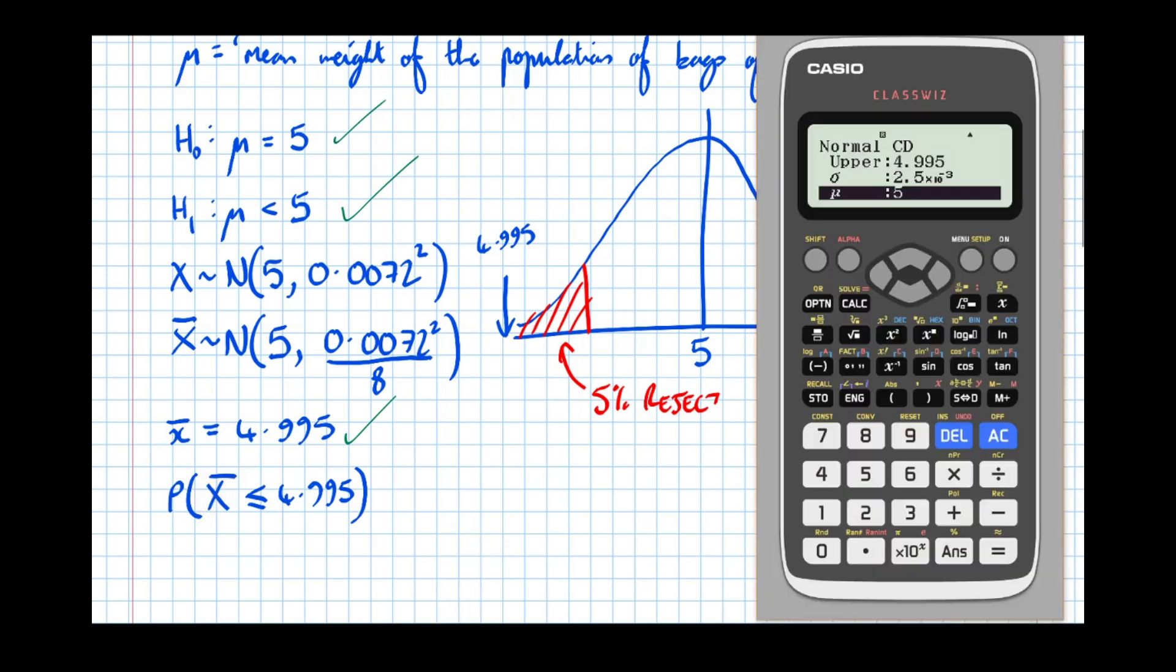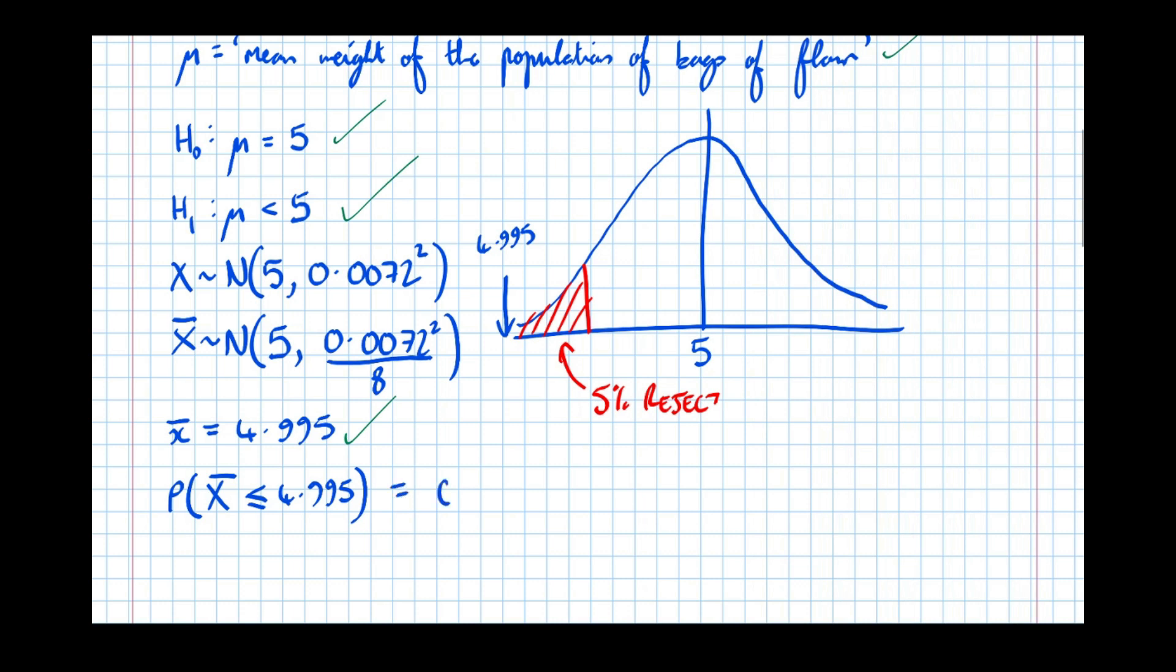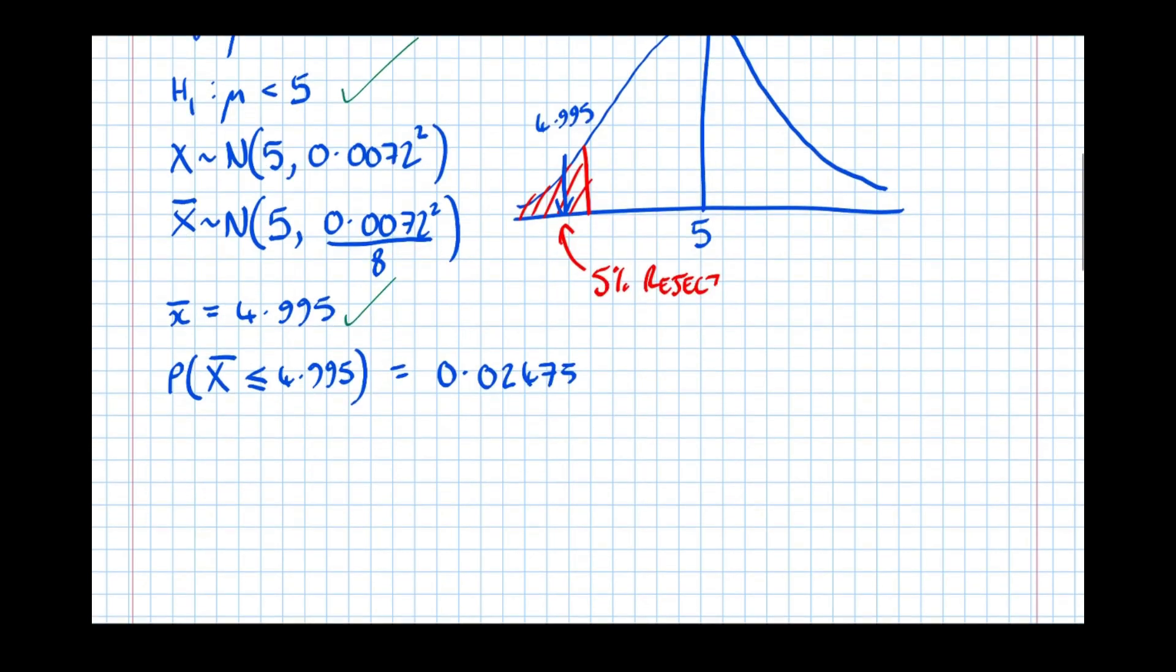So now we can see where on this sliding scale it lies. The bottom 5% we reject, and we'll see that to the left of 4.995 is 0.02475 probability, so it lies in the rejection region. There's two marks for having calculated that. Now make a comparison to our significance level. 0.02475 is less than our significance level 0.05. That's a mark.